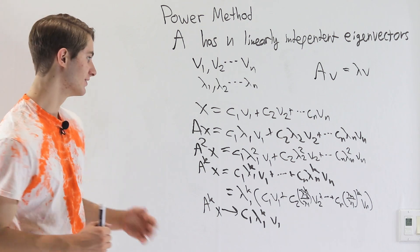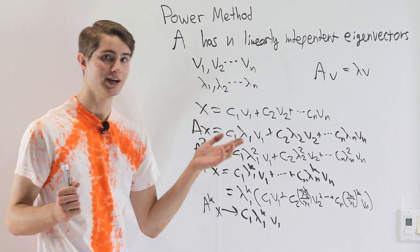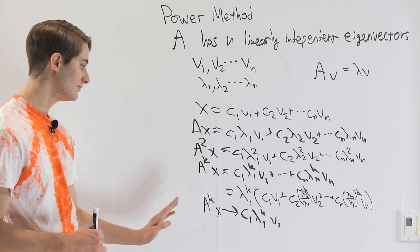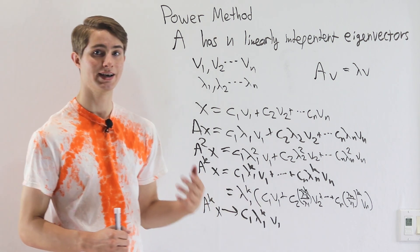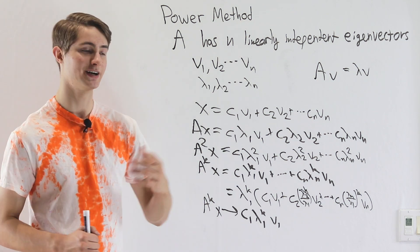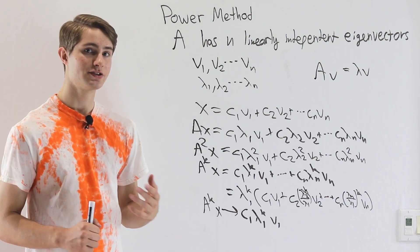So we are able to use the power method by taking some random vector x and multiplying by our matrix over and over and over again, eventually it approaches an eigenvector that corresponds to the dominant, the biggest eigenvalue of our matrix. And in the next video, we'll talk about how to find eigenvalues besides the biggest one.